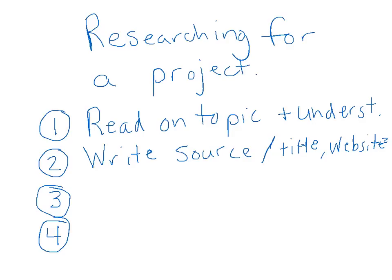The third thing you're going to do is take some notes - write the key words only. This is the part that kids really get confused on when they're doing research: they start writing down everything that they read. If you're going to do that, you might as well just print it out. When we take notes, we only write down the key words, the most important words. I'm going to model this for you in just a second.